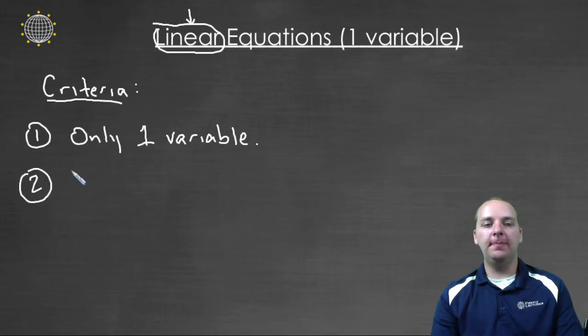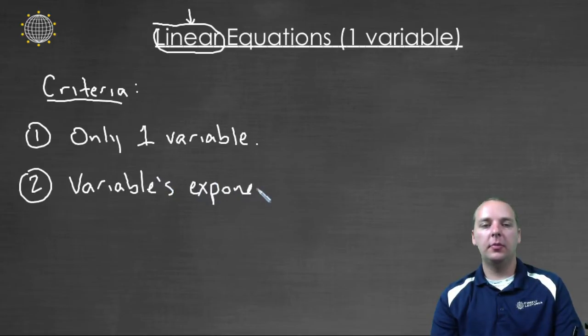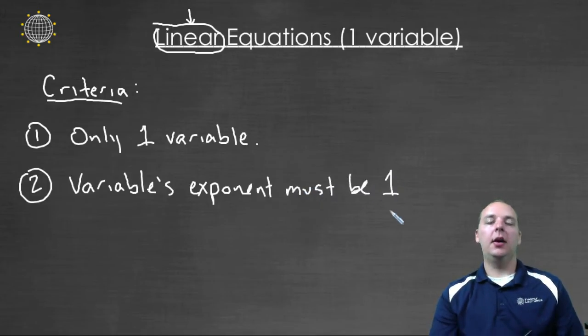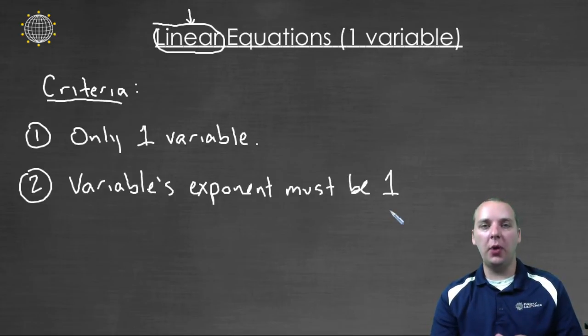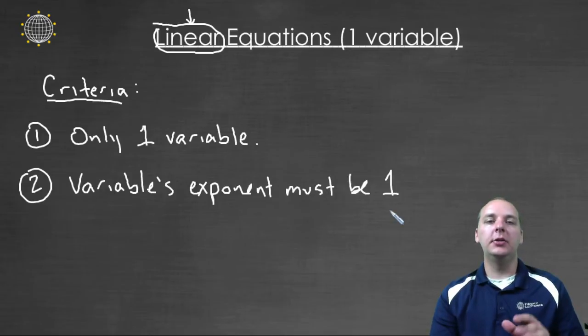Number two, second criteria, is that the variable's exponent must be one. So you can have x's, and that's totally fine. You can even have exponents, I'm not saying you can't have exponents. But any variable that you have cannot be squared or cubed or what not. That would make it one of the other types of equations. So you can have x, but just make sure that it's to the first power.